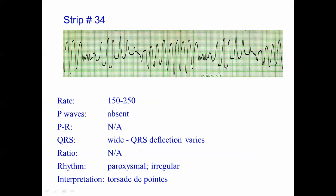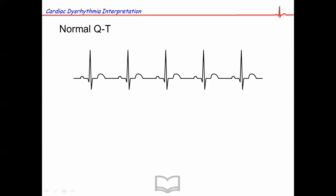Now the most common cause of torsade de pointes is a long QT, so QT interval greater than normal. Let's go over QT interval again.